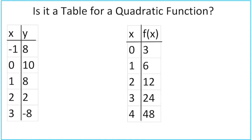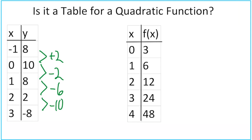Here are two more to try. Find your first difference and see if your second difference is a constant value — if it is, then it's quadratic. On the first one: first differences are +2, -2, -6, -10. The second differences are -4, -4, -4. That is a constant, so this is a quadratic function.